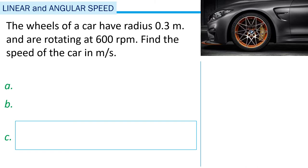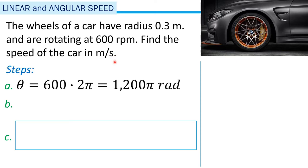Second example: The wheels of a car have radius 0.3 meters and are rotating at 600 revolutions per minute. Find the speed of the car in meters per second. Note we have minutes and must convert to seconds. First, we find theta: 600 revolutions multiplied by 2 pi radians per revolution gives 1200 pi radians — the total number of radians in those 600 revolutions.